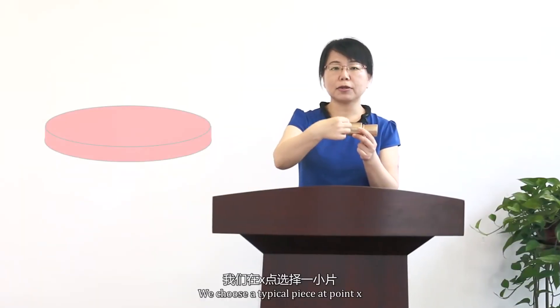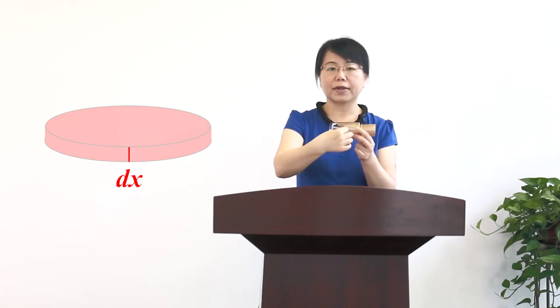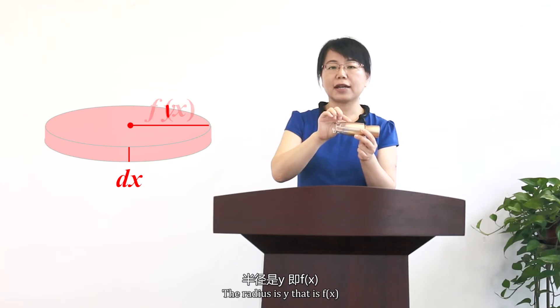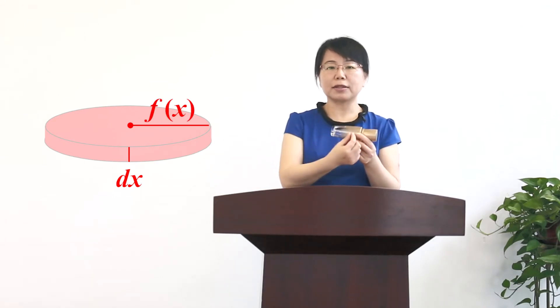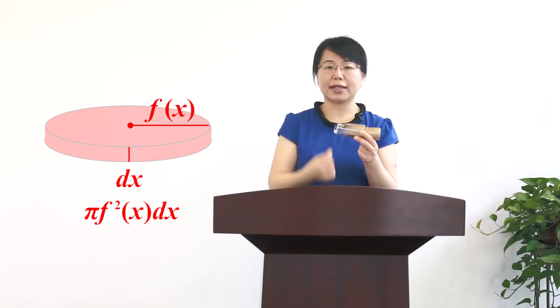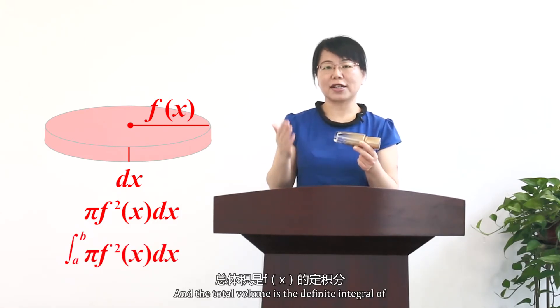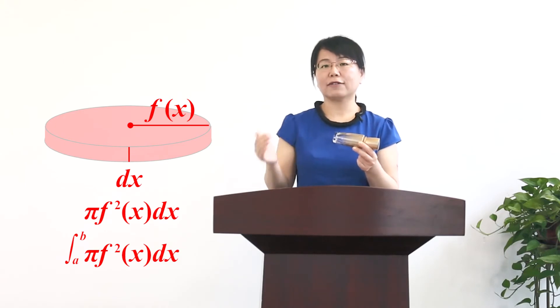We choose a typical piece at point x. The thickness of the piece is dx. The radius is y, that is, f(x). So the approximation of the volume of the disk is π f² times dx. And the total volume is the definite integral of the function π f².